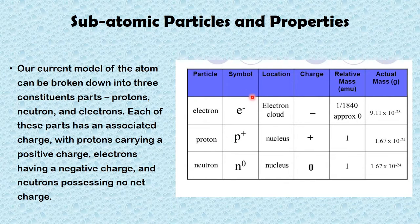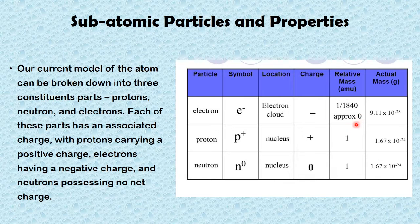Let's start with the electron. The symbol for electron carries a negative charge. Its location is an electron cloud — it moves around the nucleus. Its relative mass in atomic mass units (AMU) is 1/1840, which is approximately zero, so it is almost negligible in mass relative to the proton and neutron. If we divide the proton into 1840 parts, one of those parts would be comparable to the mass of the electron. The actual mass in grams is really very small — almost negligible.